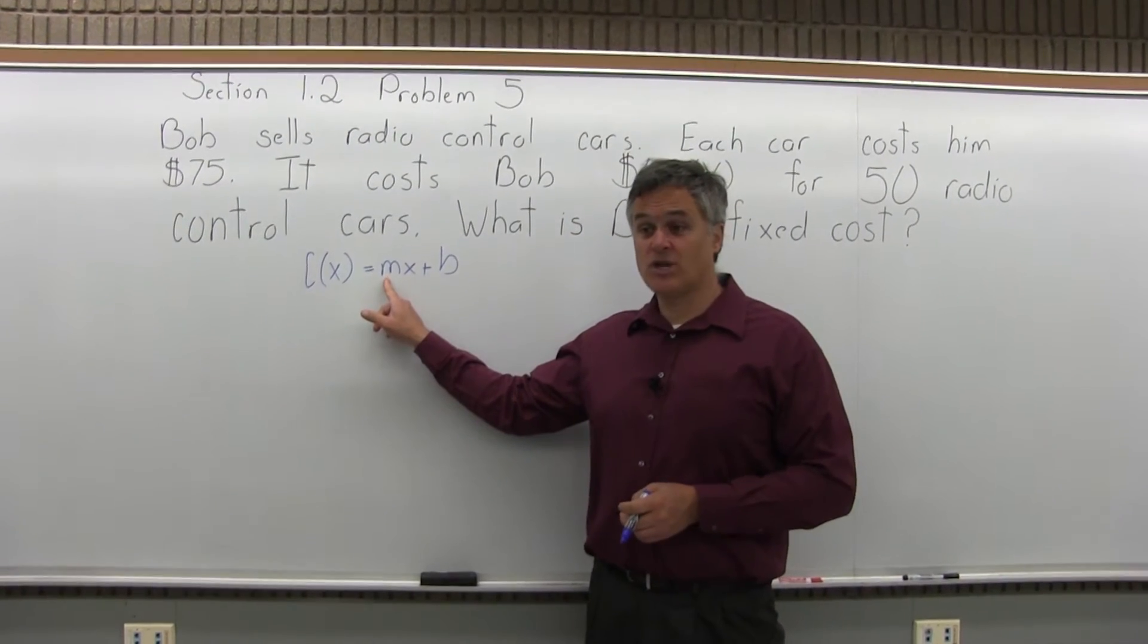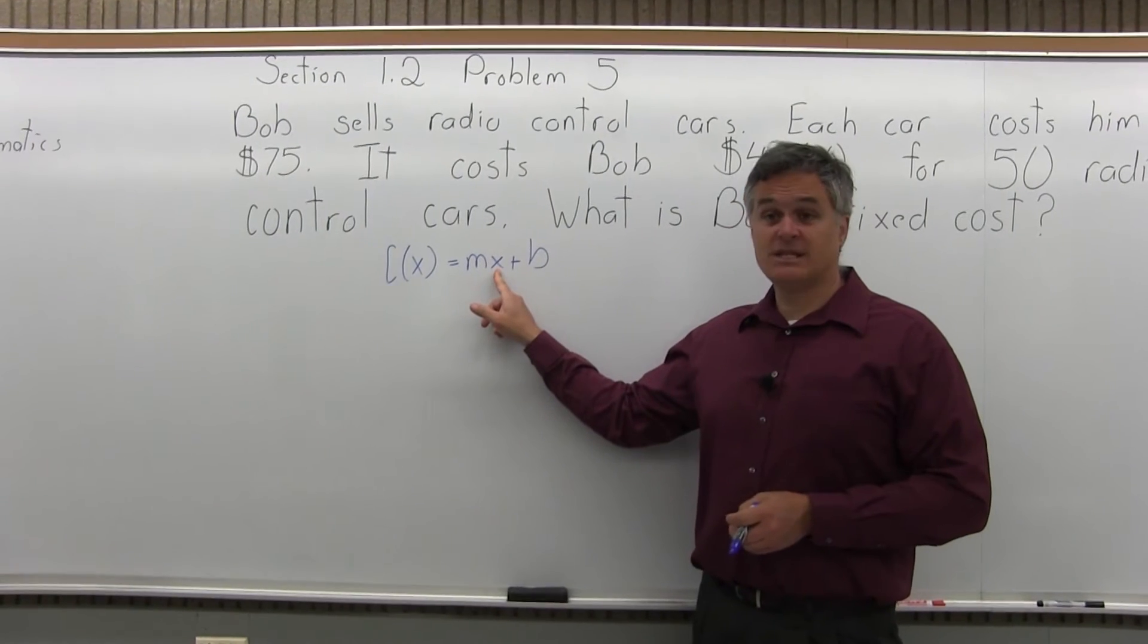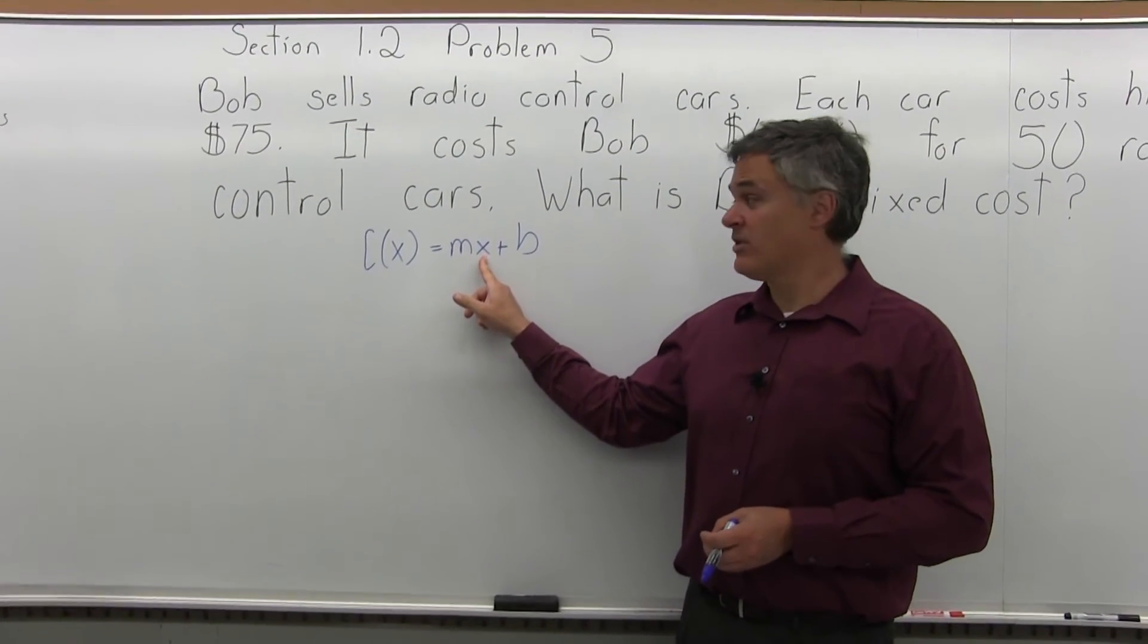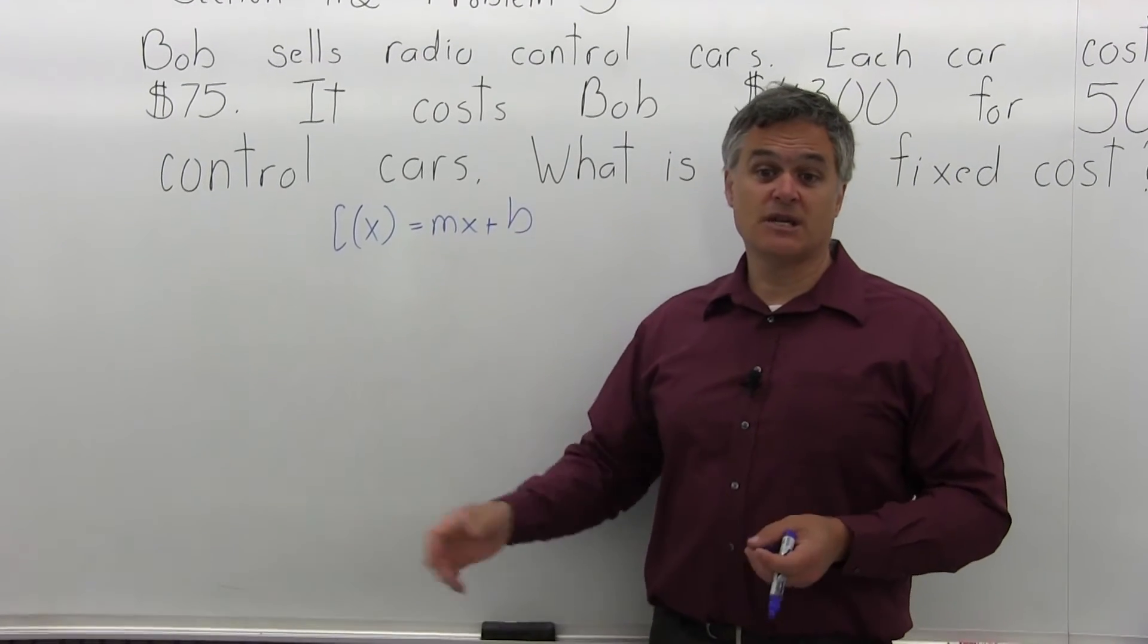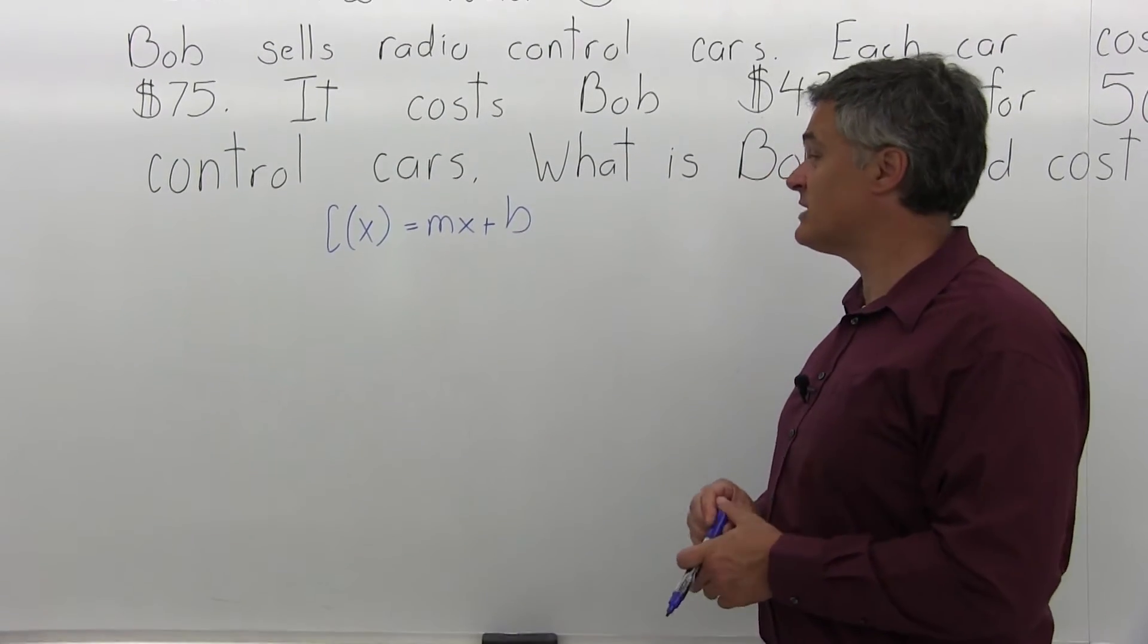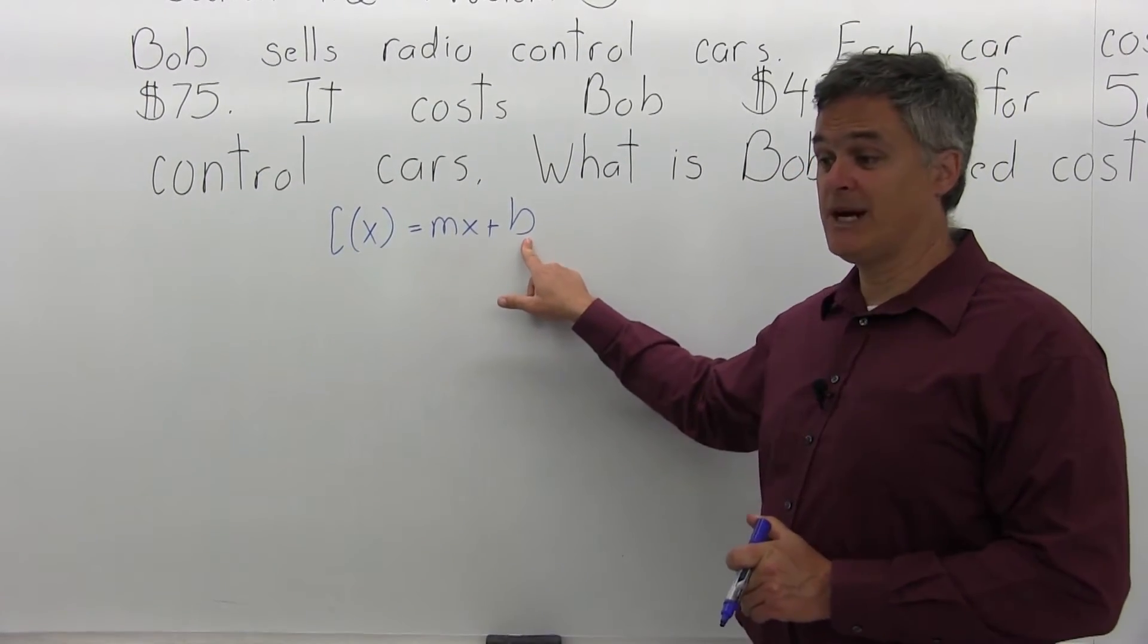M is for marginal cost, so the cost per item. X represents the number of items, or number of radio-controlled cars in this problem. And B is the fixed cost. Again, the cost to stay in business even if no items are sold. That's what we're looking for here. We want to get B by itself.